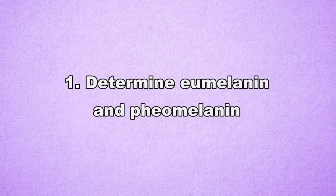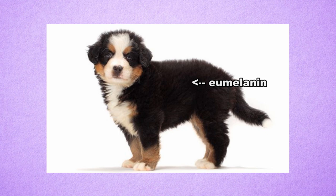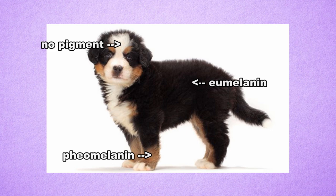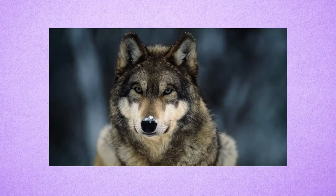Color genes in dogs do two things: they determine eumelanin and phaeomelanin colors and shades, and they control the distribution of these two pigments. They tell certain cells to produce eumelanin, produce phaeomelanin, and sometimes not to produce pigment at all. Hair can grow banded with black and red — this is called agouti. It can also occur in dogs, but is fairly uncommon in most breeds. It comes directly from wolves, which can be known as wolf gray.